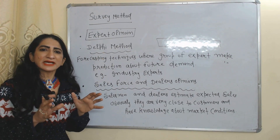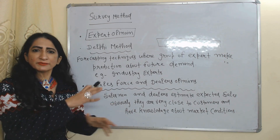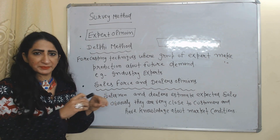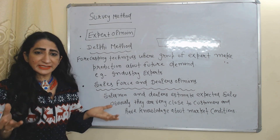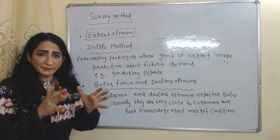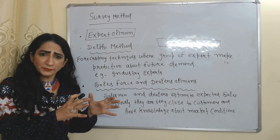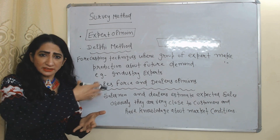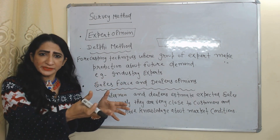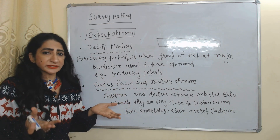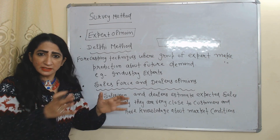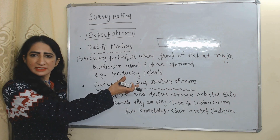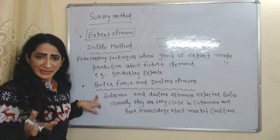First is the Delphi method, which comes under expert opinion. Delphi is a forecasting technique where a group of experts make predictions about future demand. For example, industry experts predict market demand for many companies because they have a lot of knowledge and skill in a particular industry.